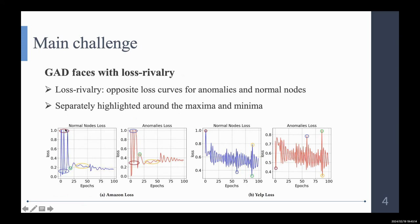As we can see from the same color here and here, here and here, we see that normal nodes and anomaly nodes have opposite loss curves, which makes the model hard to converge.